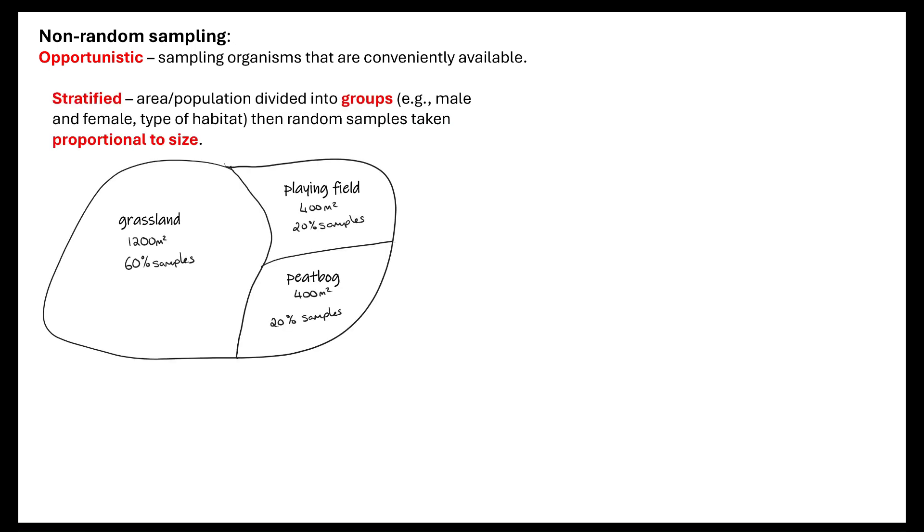If we do what's known as non-random sampling, we can do things like opportunistic sampling. This is where we're going to sample organisms that are conveniently available. There's stratified sampling where the area population is divided up into groups. This could be we're looking at the number of males and females or we could be looking at the types of habitats.